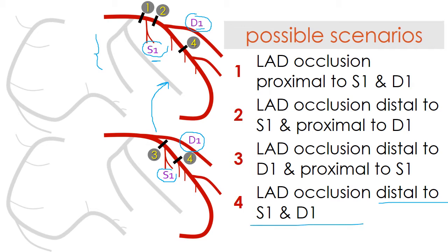In this video, we will explain the electrocardiogram of occlusions proximal to both the first septal and the first diagonal branches.